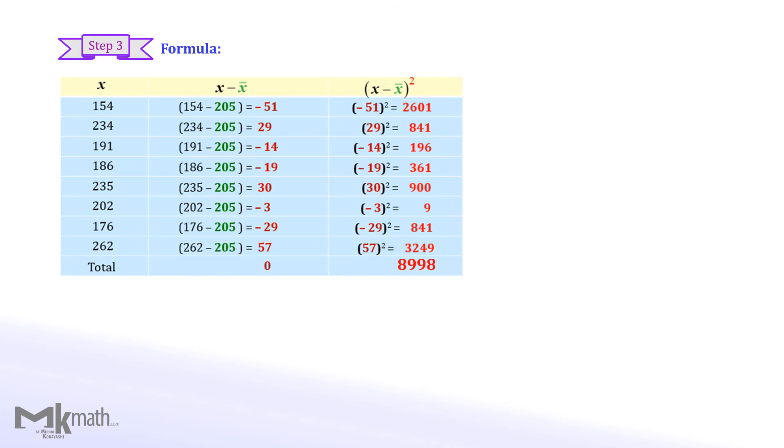As the last step, we substitute the values into the formulas. The first formula for the variance is shown. It looks complicated, but we already found the numerator value of 8998. So we just divide that value by n minus 1 to get the variance. Since the number of observations is 8, 8998 divided by 7 to get 1285 for the variance.